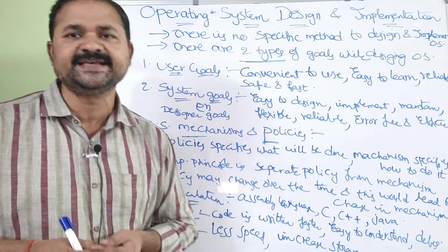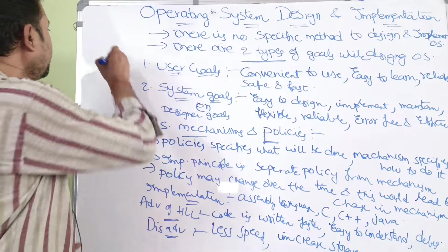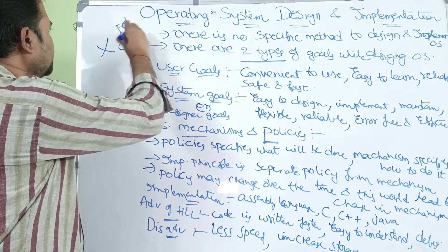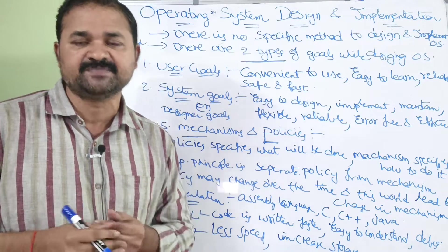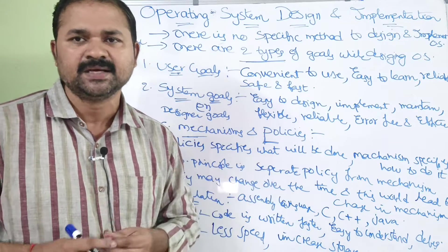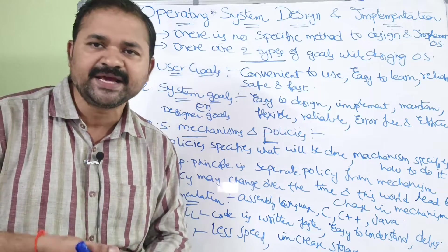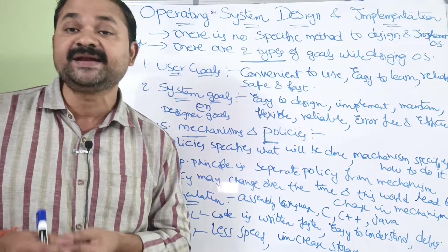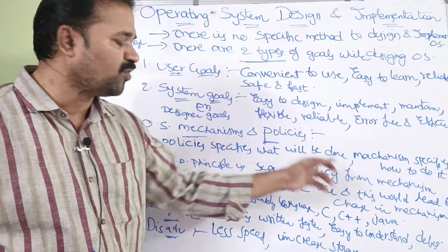Let us assume that our policy is developing an app for a college. This is our policy. In order to implement this policy, we use various mechanisms. We know that any project is implemented with the help of requirement analysis, then designing, coding, implementation, and testing. That is nothing but implementing the policy. So policy means what will be done, and mechanisms are the steps used to carry it out.